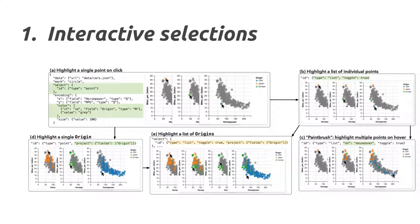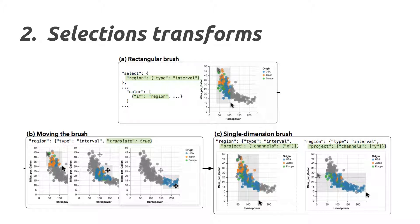We're going to have options for being able to select certain items on the graph, select multiple ones, do a whole list, do a paintbrush-type select — so as you move the mouse across it will select a whole bunch. These are all options that will be expressed in the grammar itself. We're also going to support locking selections to particular axes.